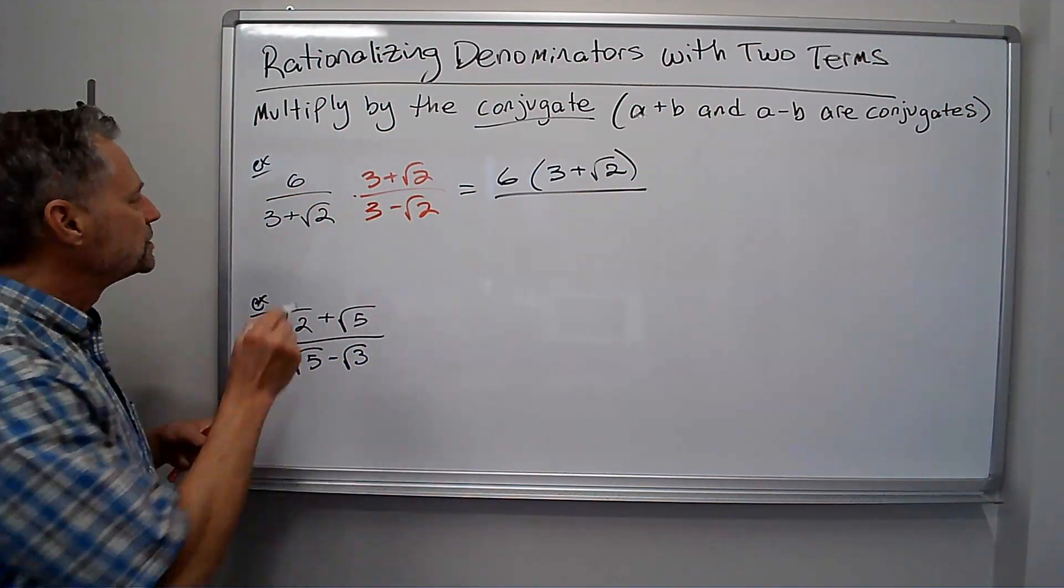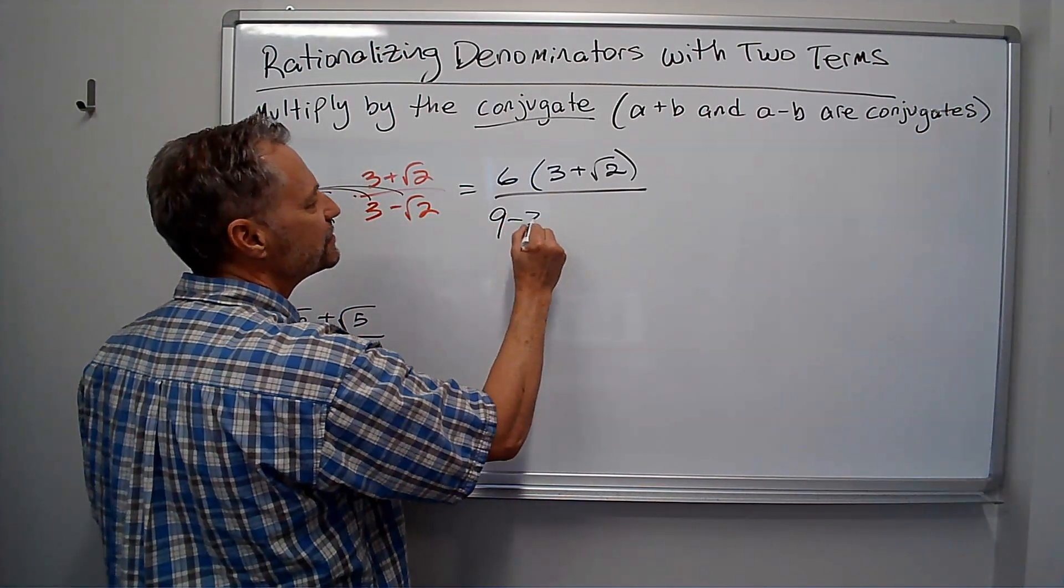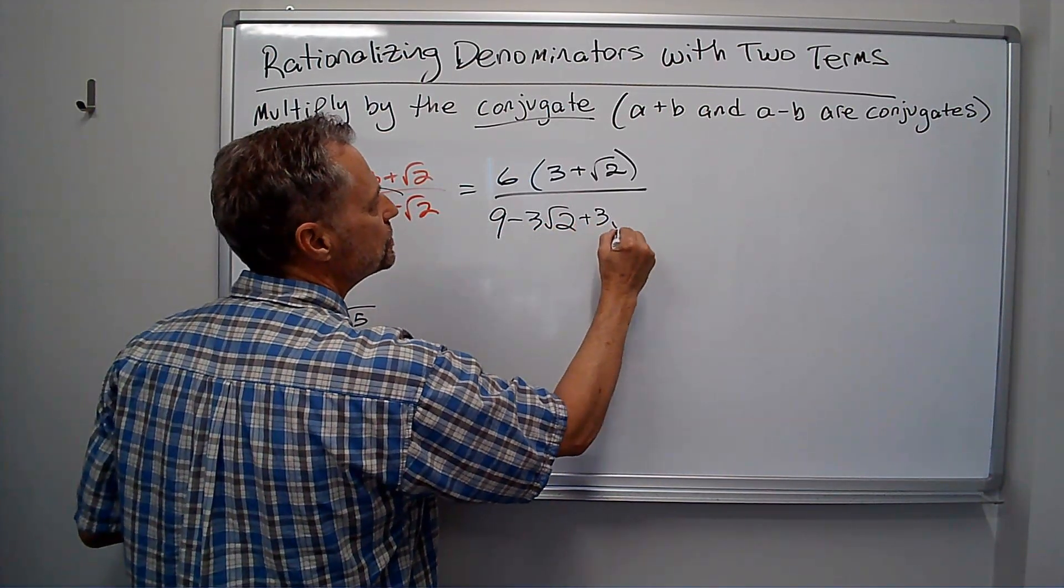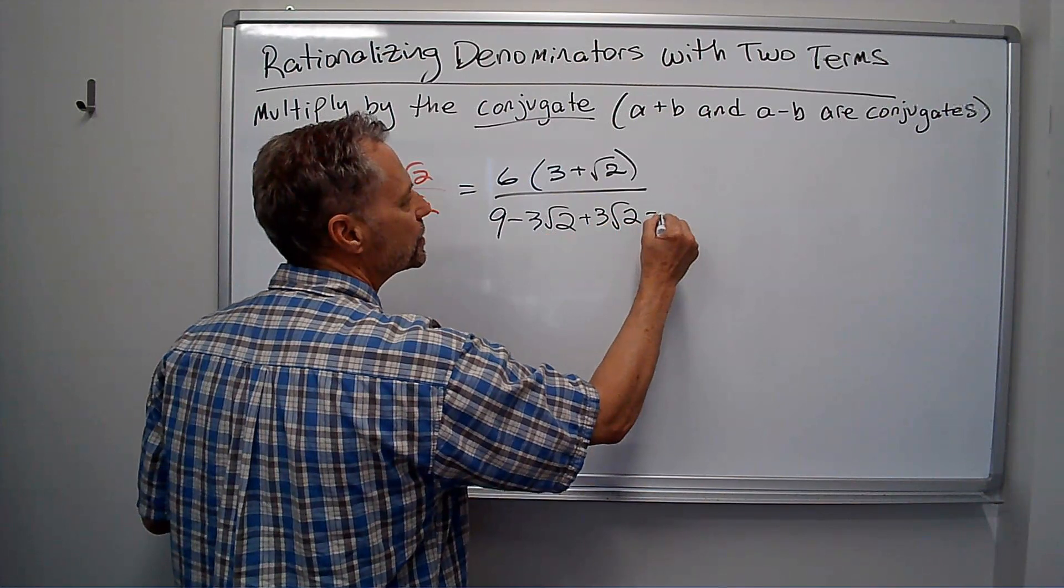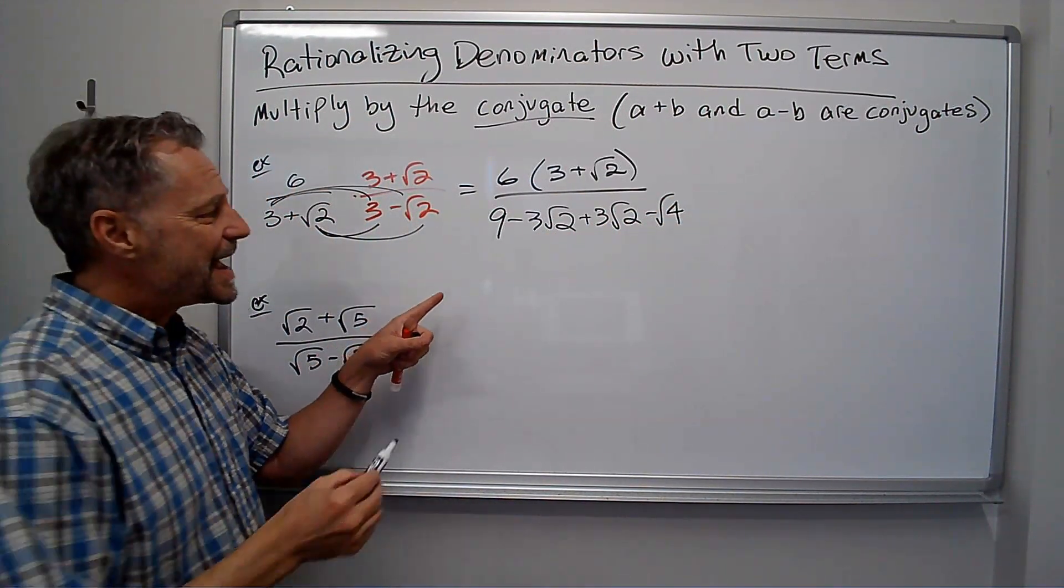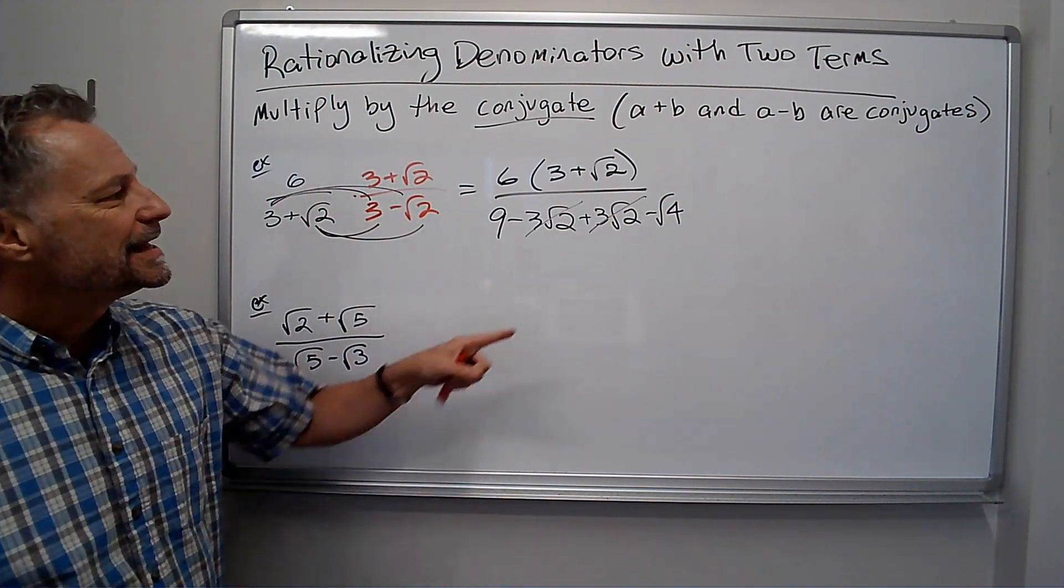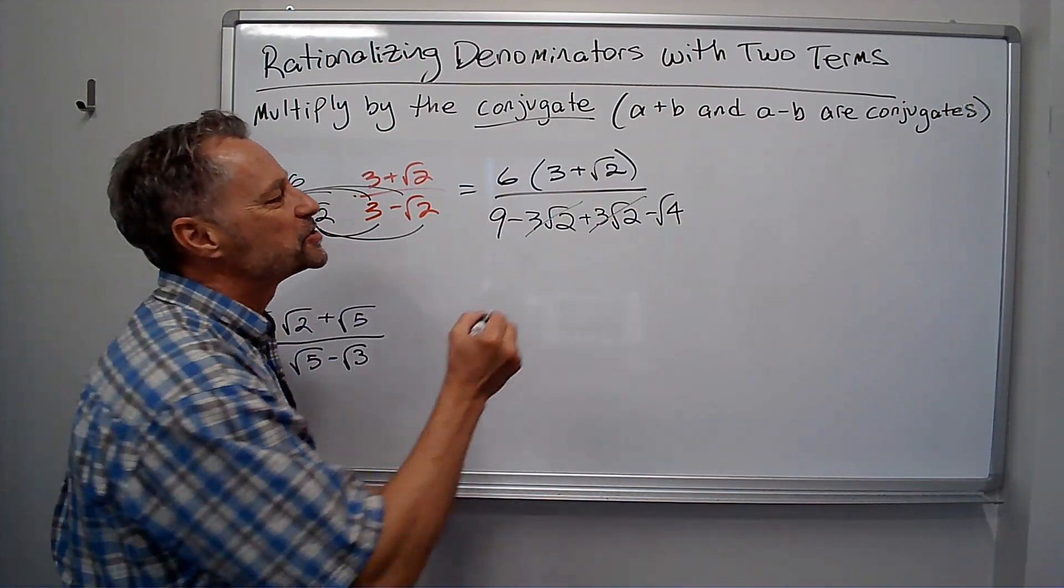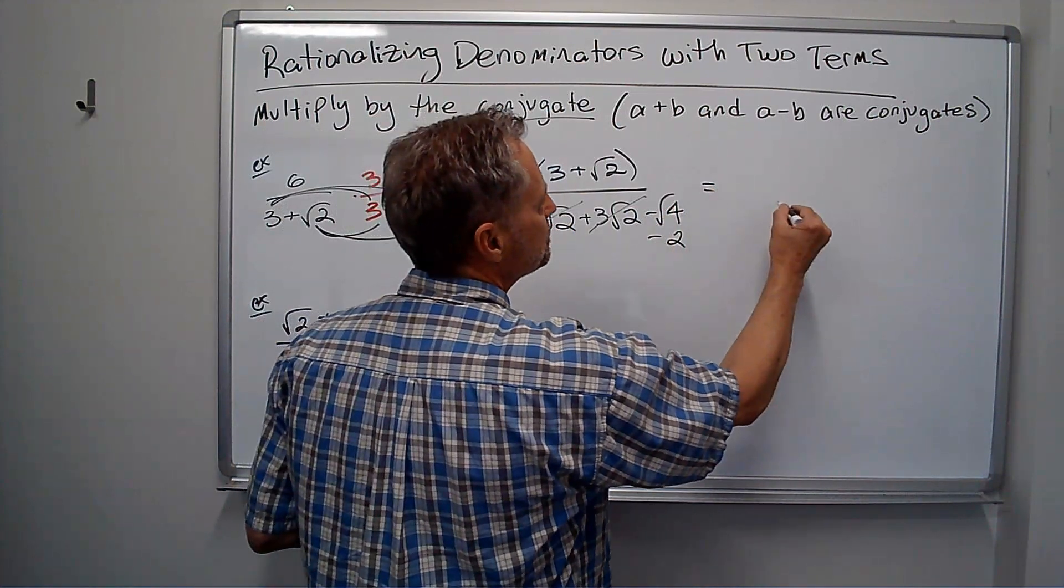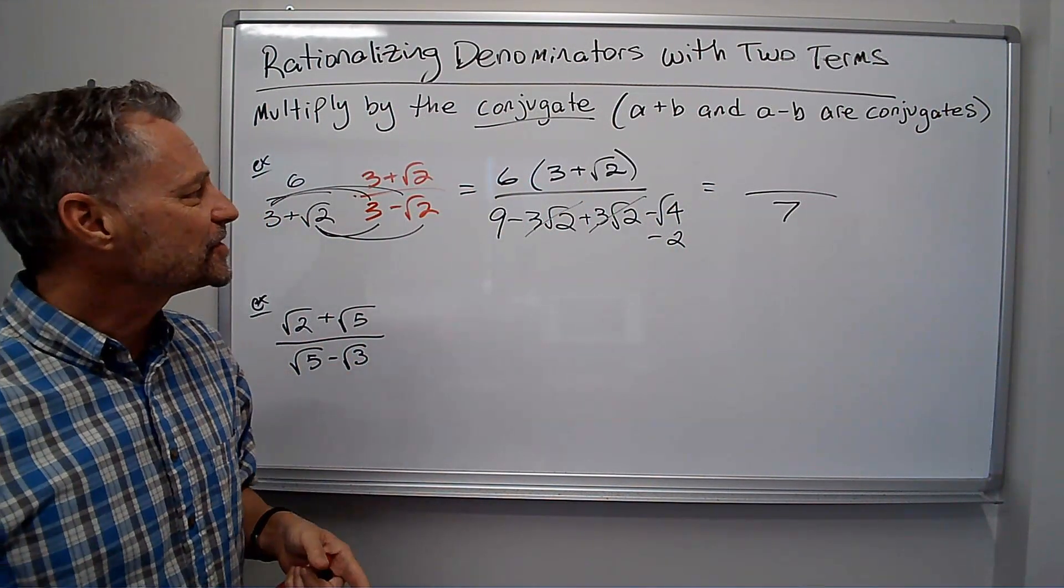But the bottom, I'm going to foil out. So I get 3 times 3 is 9. 3 times negative root 2 is negative 3 root 2. Then I have 3 times positive root 2 is positive 3 root 2. And then I have negative root 2 times root 2, which is minus root 4. Notice what's happening here. The minus 3 root 2 and the positive 3 root 2 cancel. This square root of 4 is really a minus 2. So I really have 9 minus 2, which is 7. That's my denominator. It's a rational number. No more radicals on the bottom.